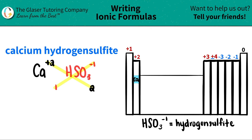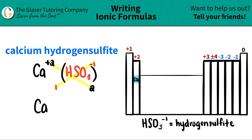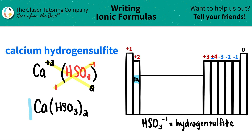Now we're ready to write our formula. I have one calcium, so I don't write a subscript for that. Since I have multiple polyatomics — two hydrogen sulfites — I need to show parentheses around the polyatomic ion. That's the rule. So I put parentheses around HSO3 and write how many I have on the outside. Calcium hydrogen sulfite is Ca(HSO3)₂.